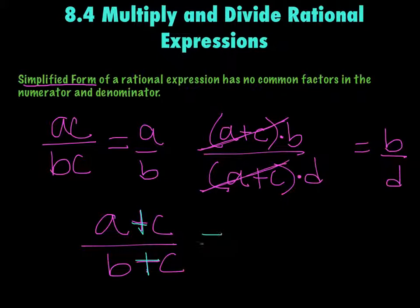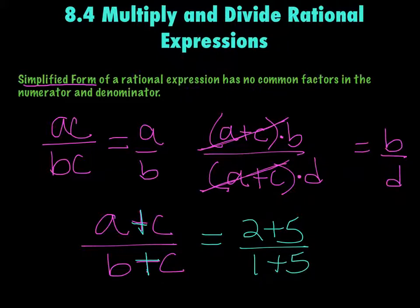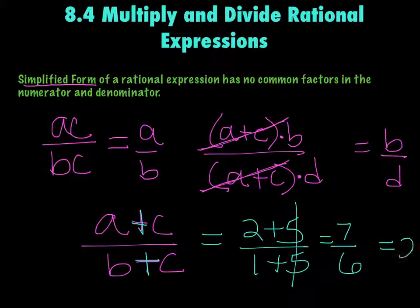I'll prove it to you. If I had 2 plus 5 over 1 plus 5, that's 7 over 6. But if you crossed out the 5's, you get 2 over 1, and 7 over 6 does not equal 2. It's not right, it does not work.